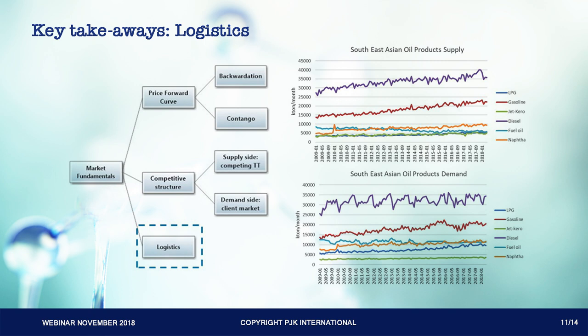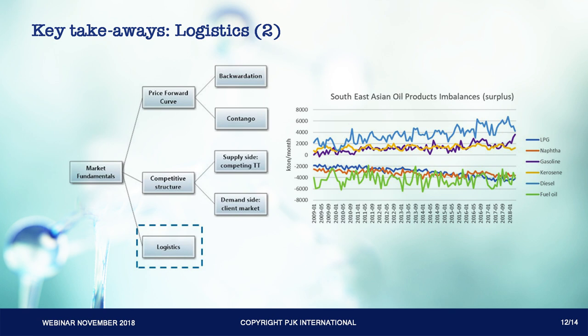The Southeast Asian refinery output primarily consists of diesel and gasoline, accounting for 44% and 26% of the region's total output in 2017. Most of Southeast Asian oil products demand is for diesel and gasoline, and demand for both has increased gradually over the last decade. Demand for diesel is rather seasonal — relatively low during monsoon season and high in winter when North Asian countries need more fuel for heating. Southeast Asia has surpluses of diesel, gasoline, and jet kerosene, meaning it produces more than it consumes; higher surpluses lead to higher exports and increased demand for temporary tank storage capacity. Deficits exist for fuel oil, naphtha, and LPG, meaning Southeast Asia has to import these products from outside the region.